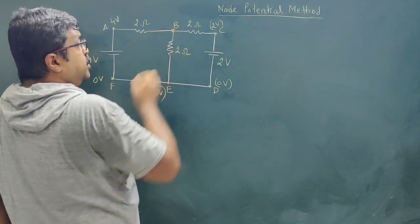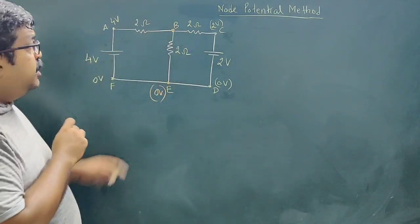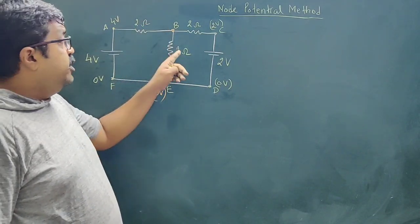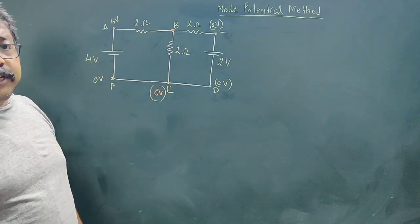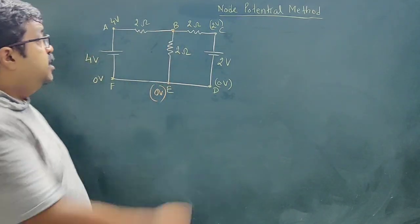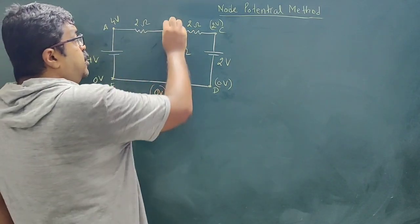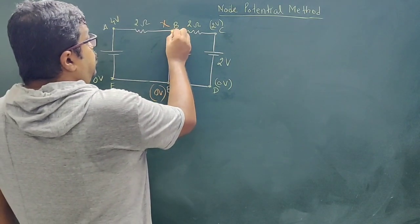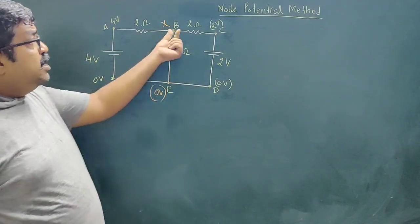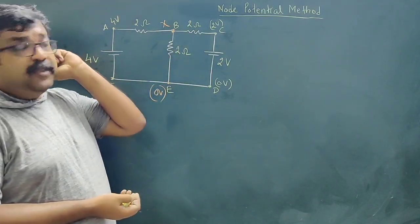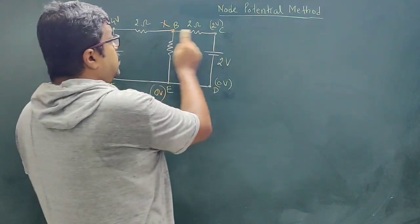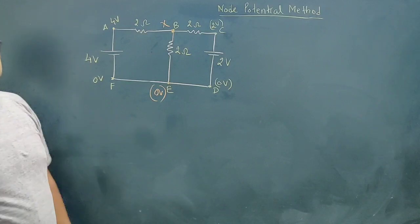Now I don't know the potential at this point. If I know the potential — this is 0 volt — and if I know the potential at this point, then the potential difference is known, resistance is given, and I can find the current. So I will take this unknown potential as X. Now this point is the node — node means junction — where more than two connections are meeting. So this is one wire, this is a second wire, this is a third wire, so this will be called a node.